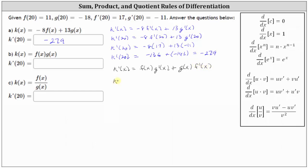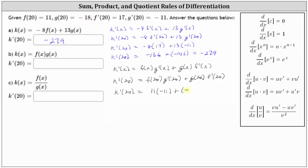And therefore, k prime of 20 is equal to f of 20 times g prime of 20 plus g of 20 times f prime of 20, and we are given all of these function values. k prime of 20 is equal to f of 20, which is 11, times g prime of 20, which is negative 11, plus g of 20, which is negative 18, times f prime of 20, which is 17.